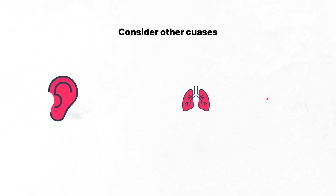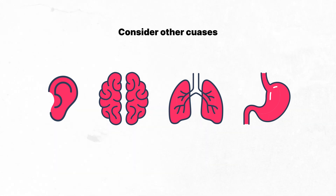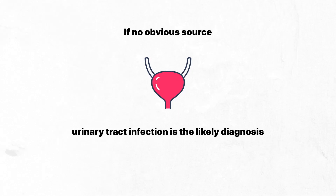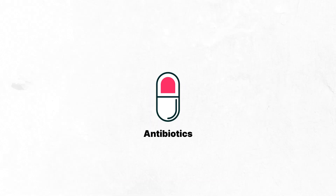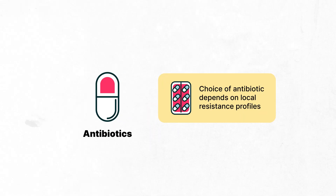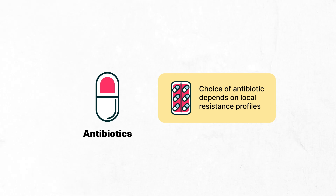If no other obvious cause of infection is present, such as an otitis media, a respiratory infection, gastroenteritis, pneumonia, or meningitis, the most likely diagnosis is a urinary tract infection, especially in the pediatric population. Currently, the treatment of urinary tract infection in pediatric patients can vary depending on the local resistance profiles to antibiotics within a region, but oral cefixime would be an acceptable choice secondary to resistance to other agents.